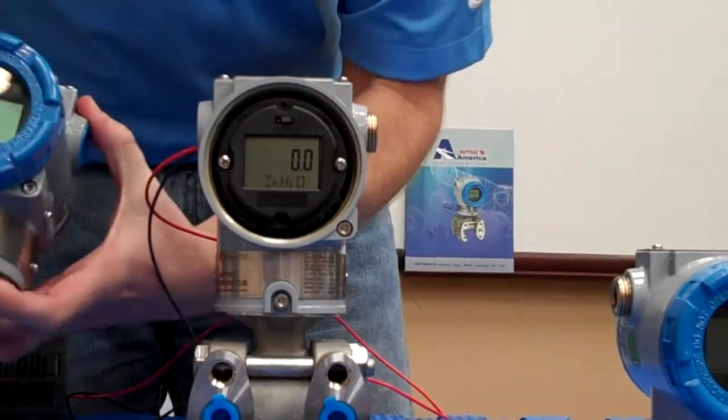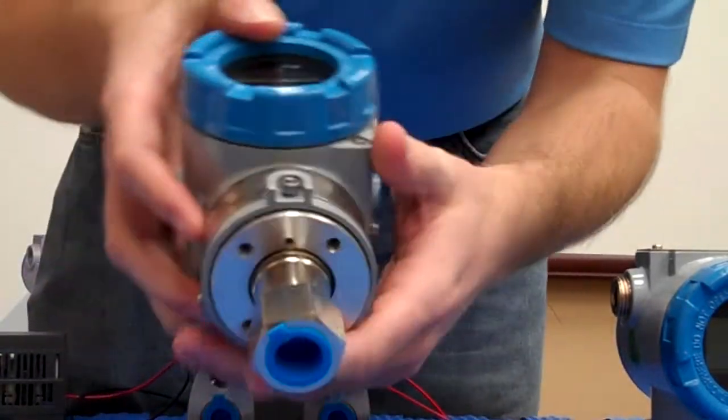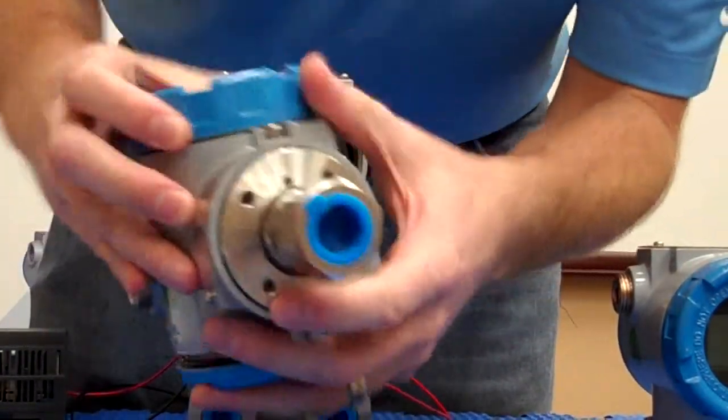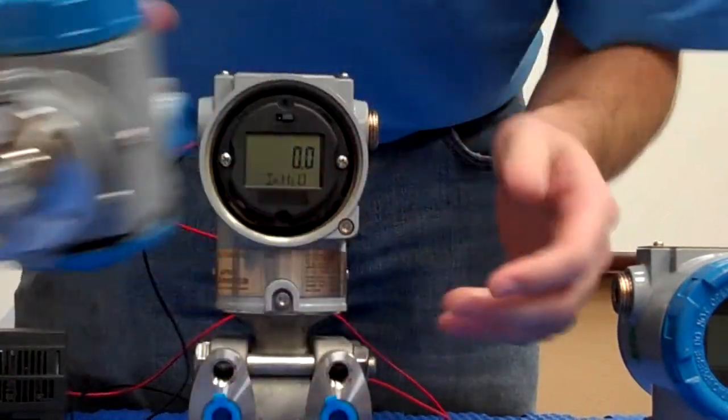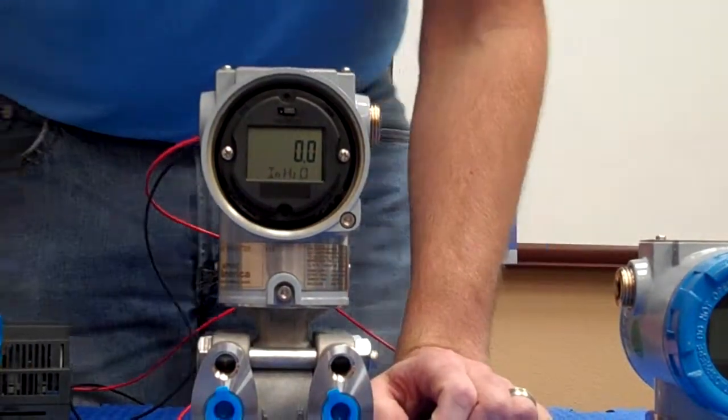One nice feature on the pressure and differential transmitters is that we can retrofit them to accommodate diaphragm seals, capillary lines, and similar components.